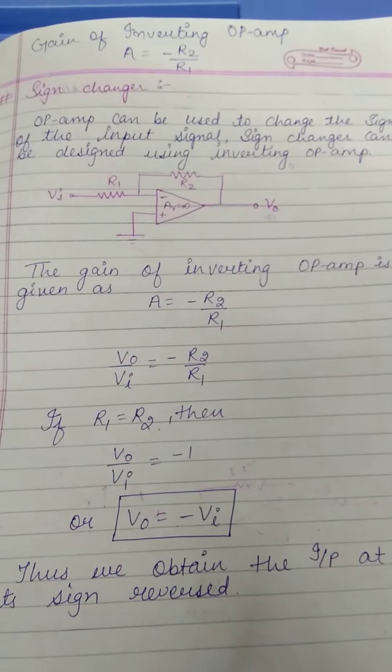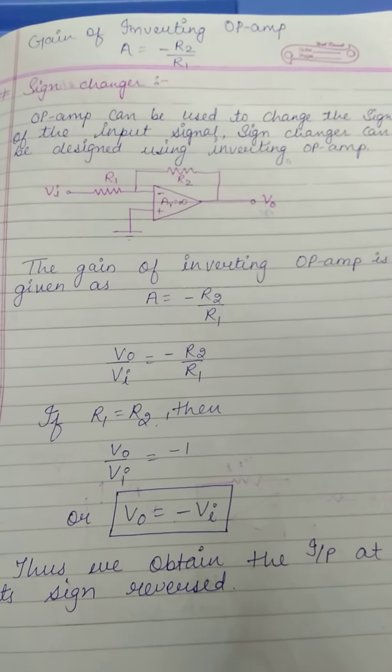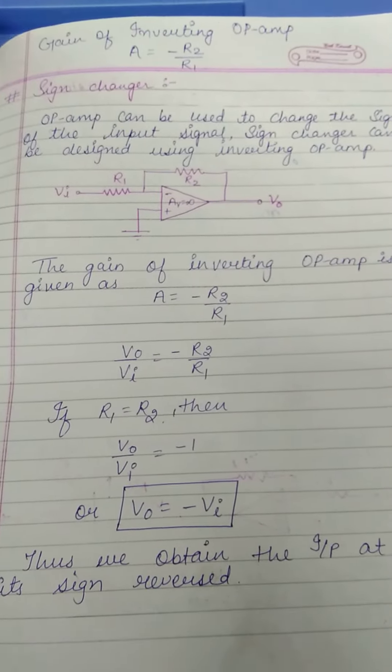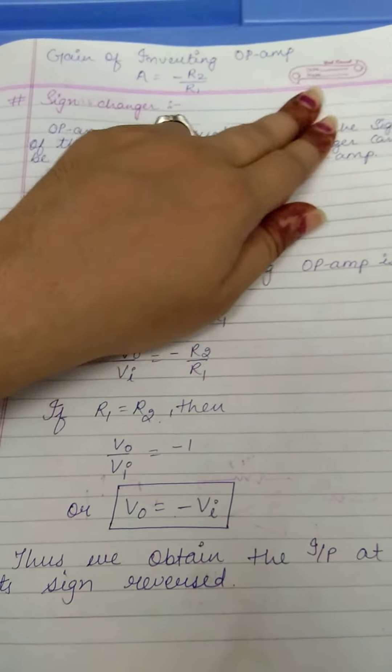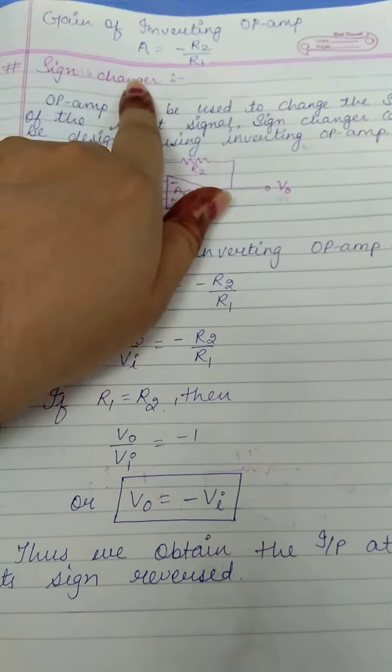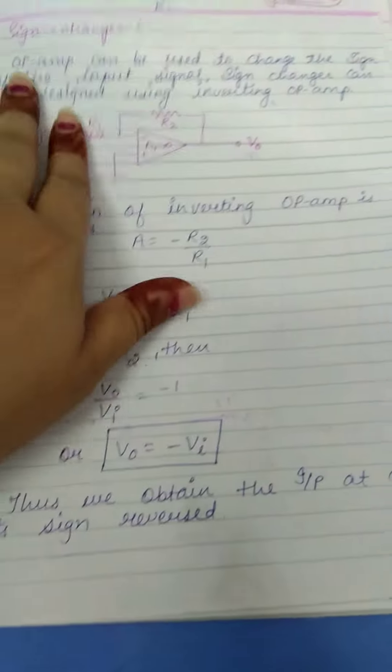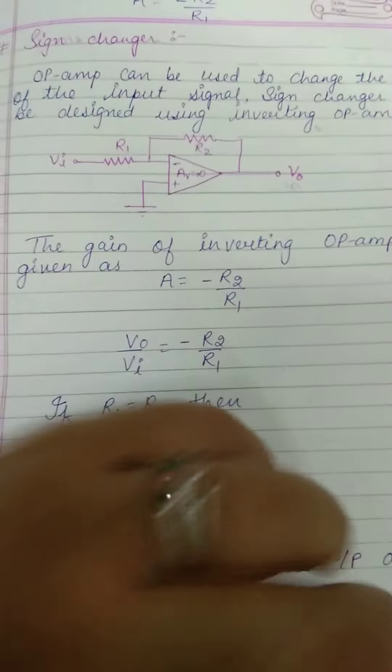This is the next topic of unit 4: sign changer. As we have studied in this unit, the gain of an inverting amplifier op-amp is A equals minus R2 upon R1. Sign changer means that we have given this input.